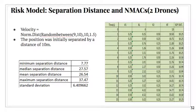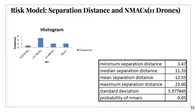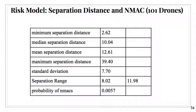For the separation distance and near-mid-air collisions, based on randomly created velocities, we were able to compute the different separation distances for two drones in order to calculate mid-air collisions. We then increased the risk model to include 11 drones and found that 13.7 binch distribution had a higher frequency. Our mean separation distance here was about 12.55. Lastly, we ran the risk model using 101 drones, and the mean separation distance remained around 13, which is very good.